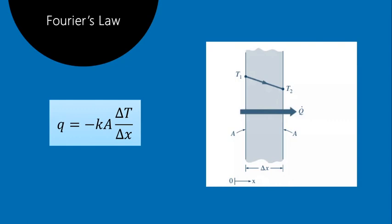Applying Fourier's Law: if we have a wall slab of thickness ΔX with temperature T1 on one side and T2 on the other, the total heat transfer Q equals KA(T1 − T2)/ΔX, where K is the thermal conductivity of the wall material, A is the cross-sectional area, ΔT is the temperature difference, and ΔX is the thickness of the wall.